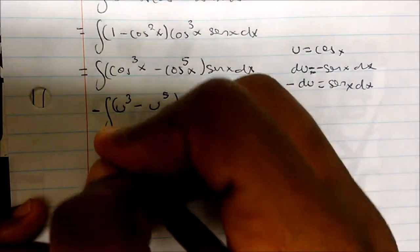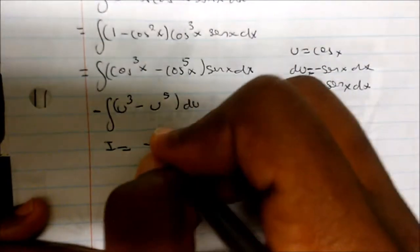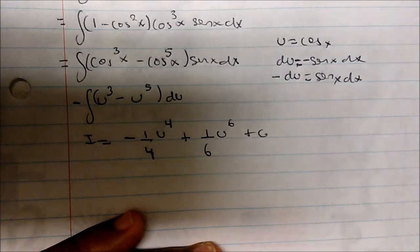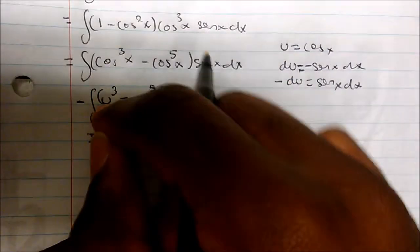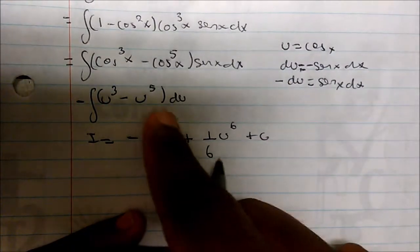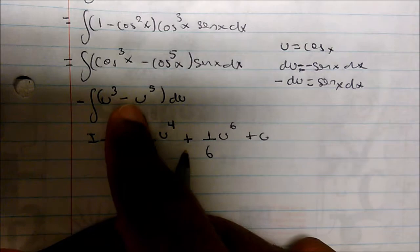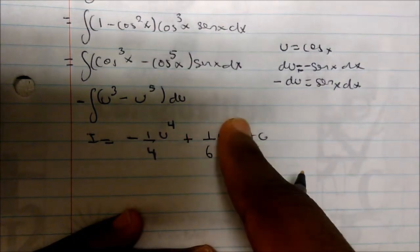The integral now is going to be given by negative one-fourth u to the fourth. Remember, the negative is being distributed, so this becomes positive one-sixth u to the sixth plus C. All I did was take the regular integral: u to the third gives negative one-fourth u to the fourth, and the negative times negative gives positive one-sixth u to the sixth plus C.